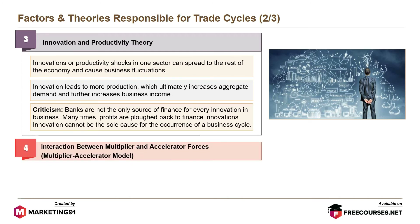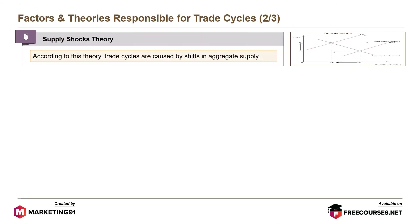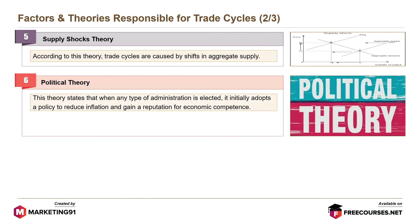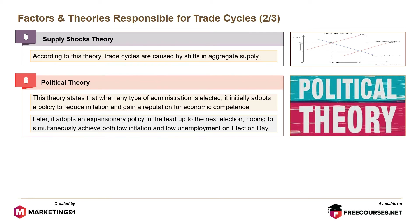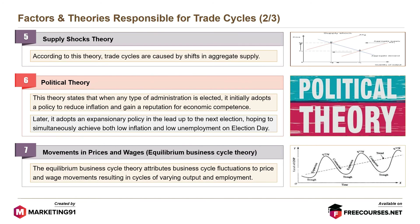Next is the interaction between multiplier and accelerator forces — the multiplier-accelerator model. This model states that the interaction of multiplier and accelerator forces can lead to the occurrence of business cycles. According to the supply shocks theory, trade cycles are caused by shifts in aggregate supply. The political theory states that when an administration is elected, it initially adopts a policy to reduce inflation, then later adopts an expansionary policy before the next election, hoping to achieve both low inflation and low unemployment. The equilibrium business cycle theory attributes business cycle fluctuations to price and wage movements, resulting in cycles of varying output and employment.